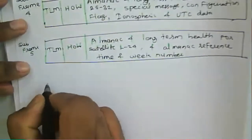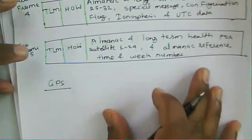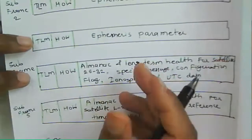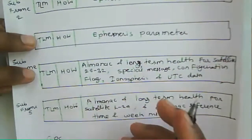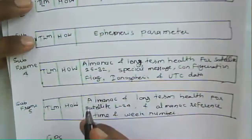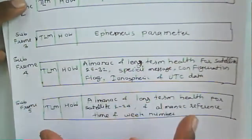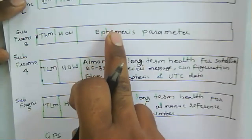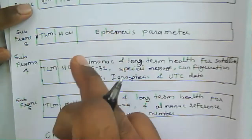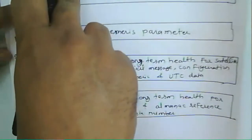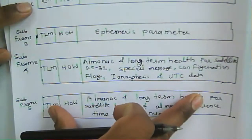GPS consists of a space segment and a control segment. From the space segment point of view, satellite information is transmitted. That is, a frame is transmitted from the satellite side, and that frame contains information — sub-frames containing information like that.